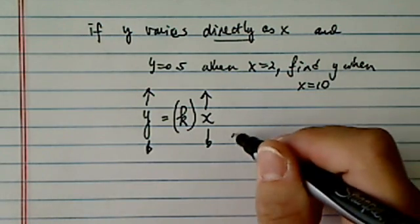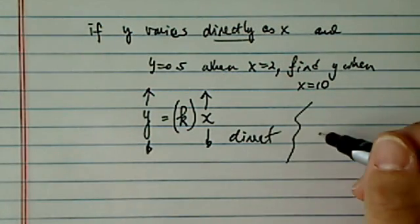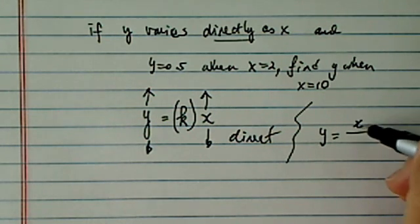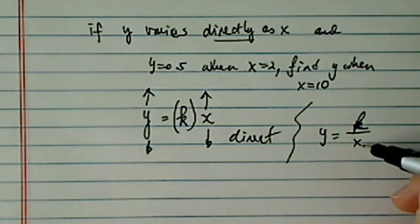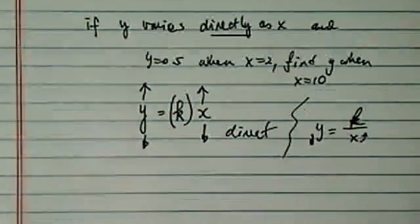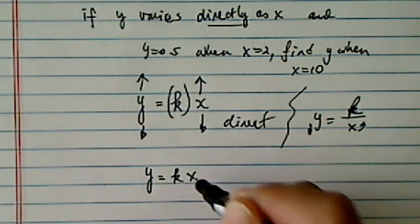That means direct variation. If it had said indirect variation, then it would be k divided by x. So x gets larger, y gets smaller. That's indirect. Since we have a direct variation, we'll have y equal to k times x.